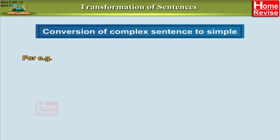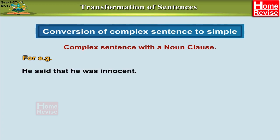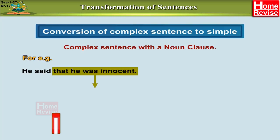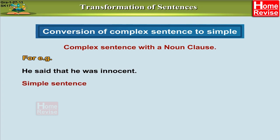Let's take an example of a complex sentence with a noun clause: 'He said that he was innocent.' Here, 'he said' is the main clause and 'that he was innocent' is the subordinate clause. A simple sentence needs to have only one finite verb — it has only one subject and one predicate.